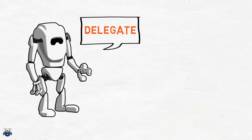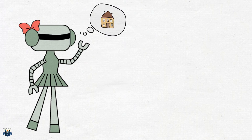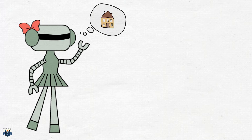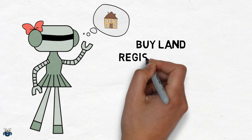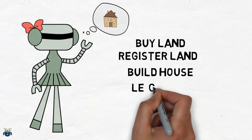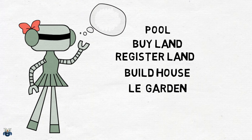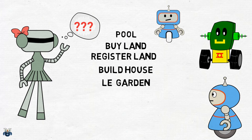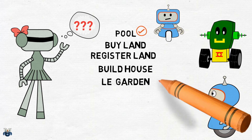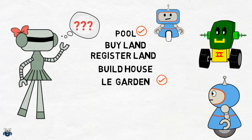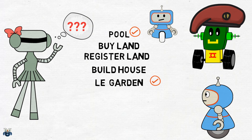Let's set the ball rolling by taking an example to understand the concept. Let's say you are in the process of building your dream house. You broadly know what you want: buy a plot of land, register the plot of land, build the house, build the garden, build the swimming pool and register the house. Now while you know what you want, you do not know how it will be done. No worries, housing agents are there to help you. Each agent provides a blueprint on how they will implement each of your requirements. You then select the most reasonable agent and delegate the job to them.